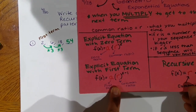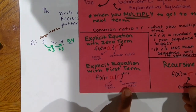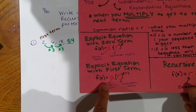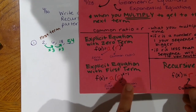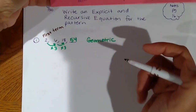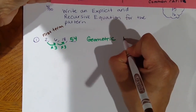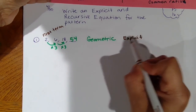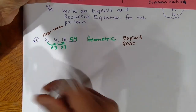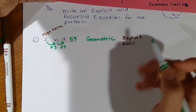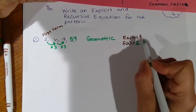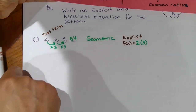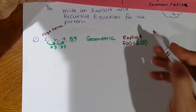The only thing we need to know is the first term and the common ratio. The first term is 2, and the common ratio is 3. We plug those in — the explicit equation is f(x) equals the first term, which is 2, times the common ratio, which is 3.